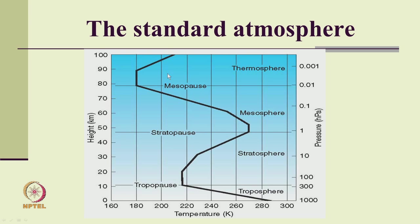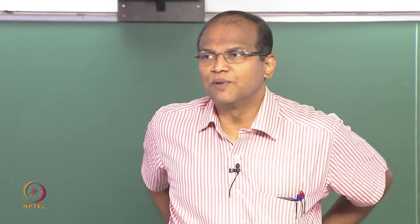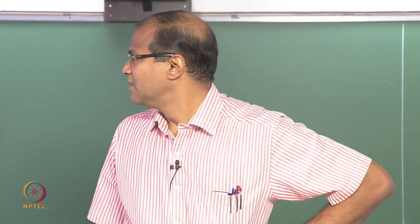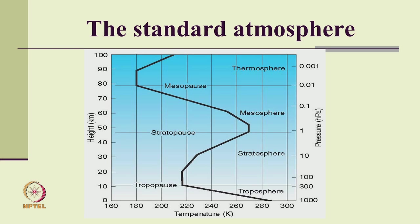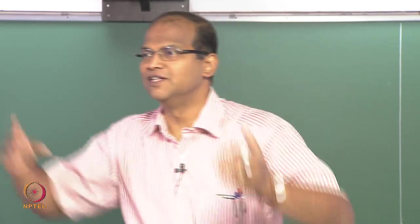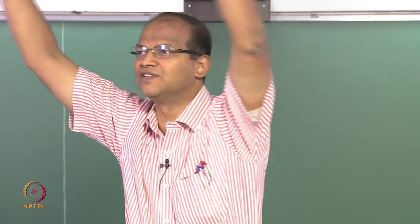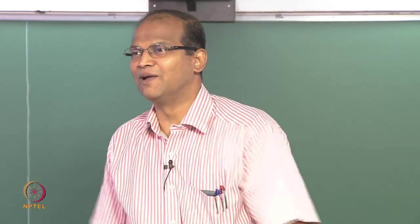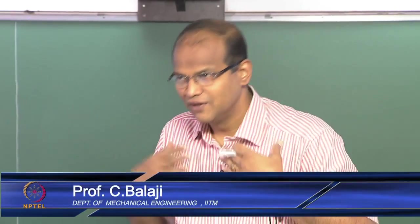Why do the graphs stop at 100 kilometers? Look at the pressure at 100 kilometers — it is 0.001 bar. It is so rarefied that there is not much activity of interest to atmospheric scientists. Physics and cosmology researchers may be interested in the higher atmosphere. For us, the first 100 kilometers is already too much — we are satisfied with that.